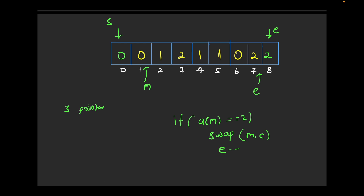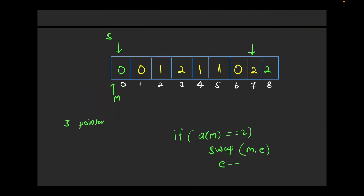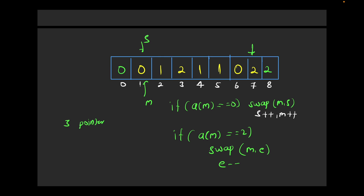After swapping, mid now contains zero. Zero should be at the start, so if a[mid] == 0, swap mid and start. After the swap, both start and mid were pointing to the same location, so no visible change, but we move both: start++ and mid++. I'm not moving mid when a[mid] == 2 because that incoming element could be zero or one, which still needs to be checked.